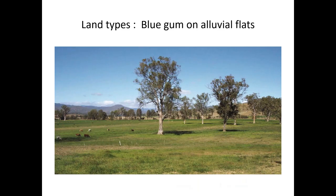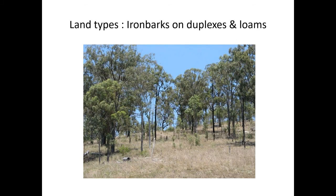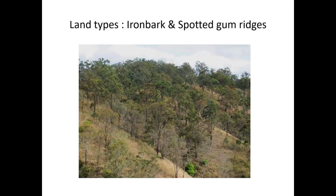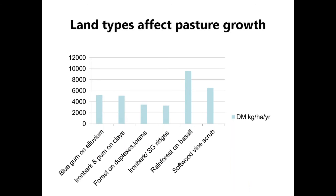Here are a few common land types you might be familiar with. There's our fertile bluegum on alluvial flats, typically our clay and clay loam soils; ironbarks on granite soils, typically lighter sandy loams or sandy soils; ironbarks on duplexes and loams — duplexes referring to those texture contrast soils where we might have a loam or sandy loam over a heavier clay; our spotted gum and ironbark ridgy country, usually limited by depth of soil, rockiness and slope; and our fertile softwood scrub type country. This graph highlights the significant difference in pasture production for a range of land types in South East Queensland at a location receiving about 800 mm of annual rainfall on average.